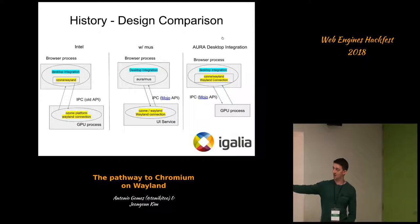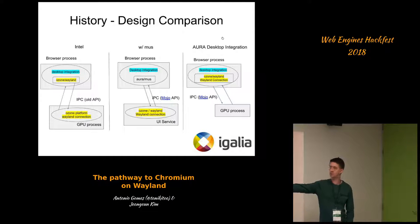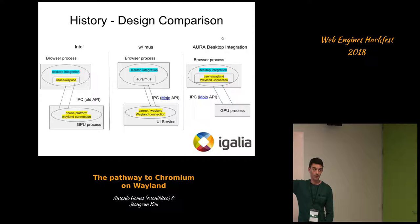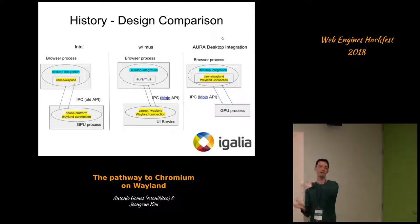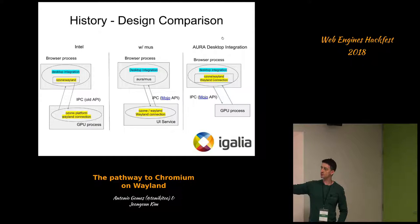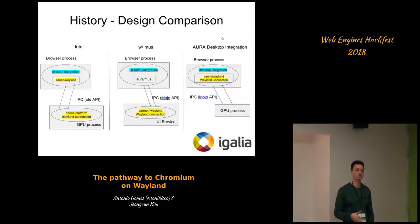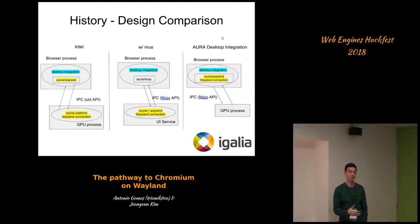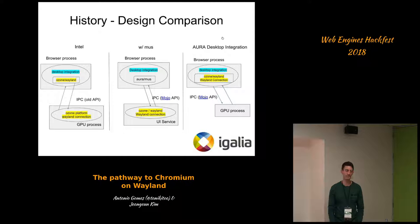Just to give a high-level idea of the different approaches over the years: on the left is the Intel approach, the original one. There are mainly two boxes representing the browser process and the GPU process. The biggest difference between Intel's and ours is that in Intel's implementation, the Wayland connection was established from within the GPU process. That was considered not a good approach in terms of security — you'd be giving the GPU process access to things it shouldn't have. It also used the old IPC mechanism that Chromium had.